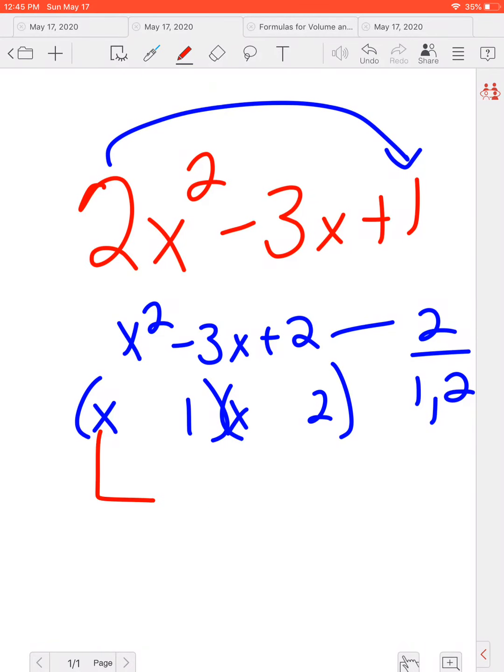Well, the only thing that multiplies to be 2 is 1 and 2. And if we check this, 2 times X is 2X, 1 times X is X, which if they're both negative would become negative 3 and a negative 1 times a negative 2 would become the positive 2 here.